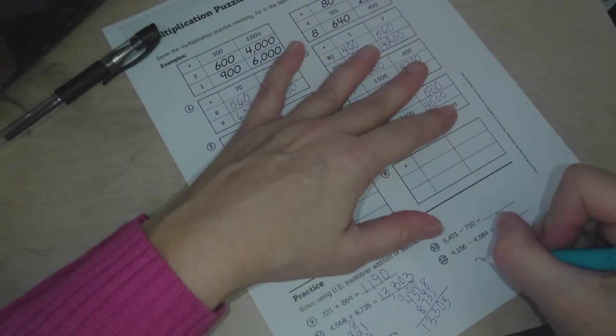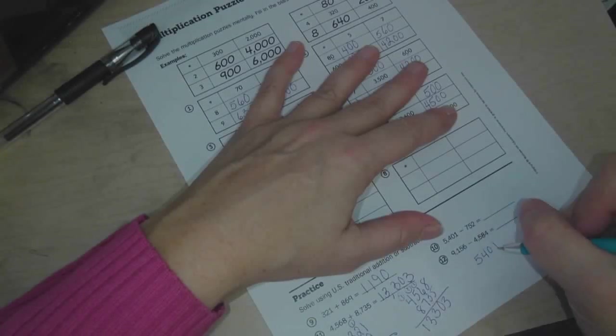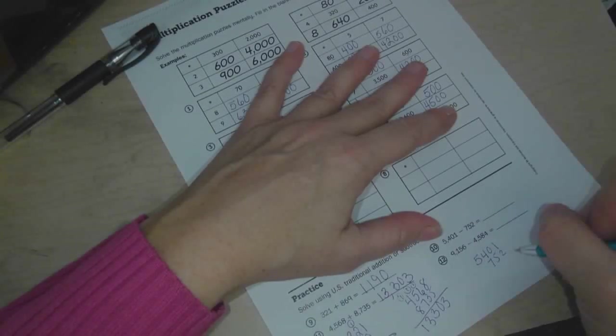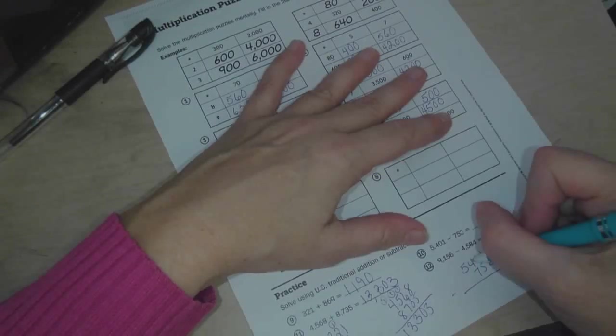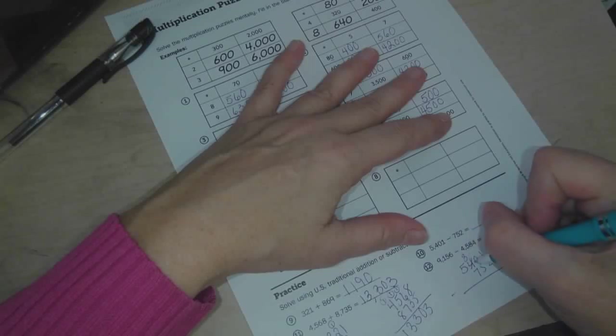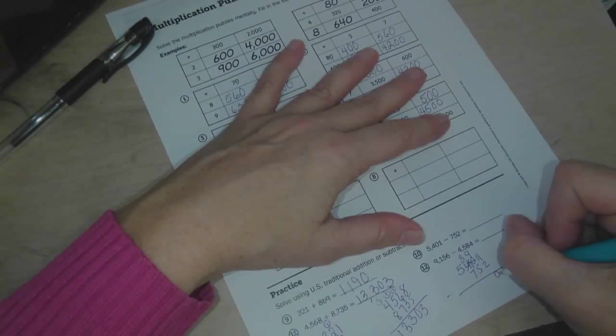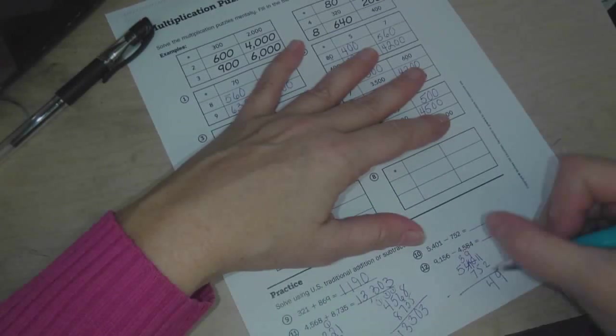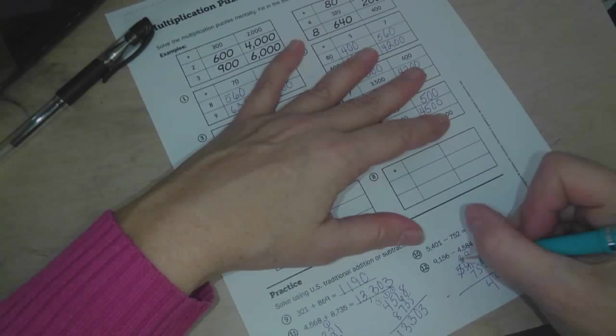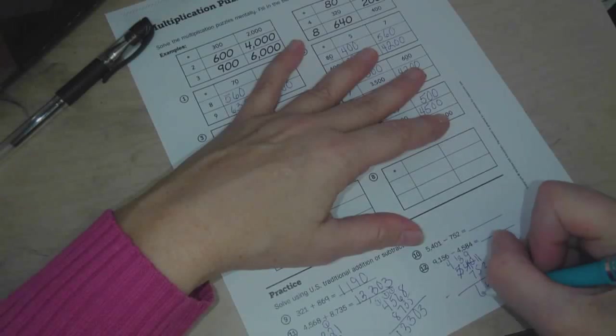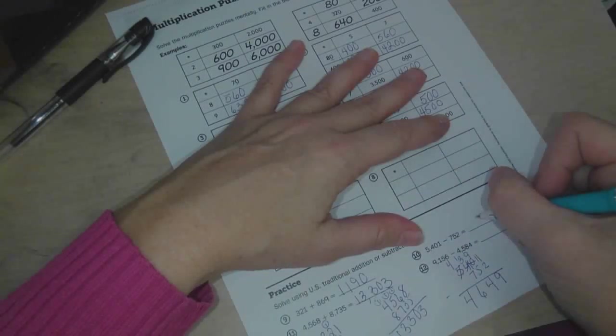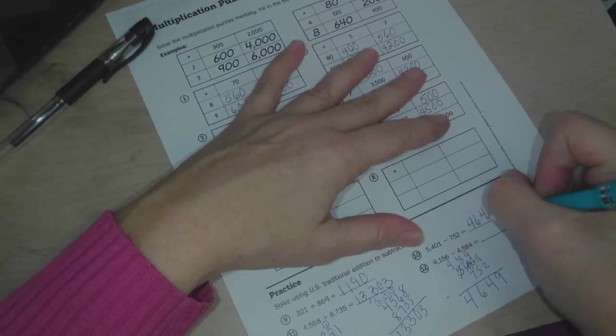Okay, now we have some subtraction problems. 5,401 minus 752. So we can't take 2 from 1, and we can't borrow from the guy next door. So we've got to go next door to the 4. Make that a 3. Makes this a 10. We've got to borrow 1 from that, making that a 9, and making that an 11. 11 minus 2 is 9. 9 minus 5 is 4. 3 minus 7. We can't do that. So we've got to borrow from the 5. 13 minus 7 is 6. And 4 minus 0 is 4. 4, 6, 4, 9.